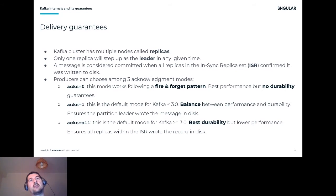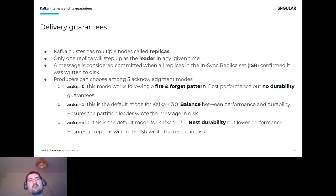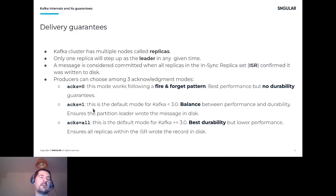With acks=1, the default before Kafka 3.0, there is a balance between durability and performance. The producer waits for only the leader to confirm it wrote the record to disk, without waiting for other replicas to replicate. Finally, acks=all, the default from Kafka 3.0 onward, waits for acknowledgement from all replicas — giving the best durability but slightly impacting performance since you wait for all replicas to write every record before getting confirmation.